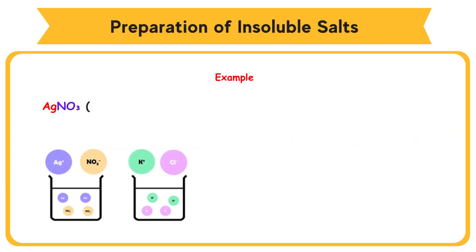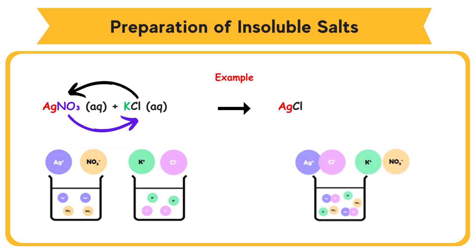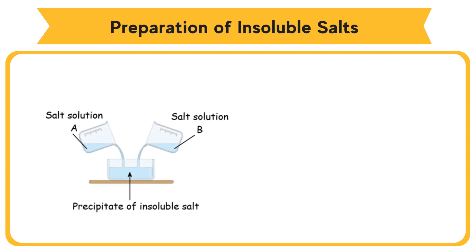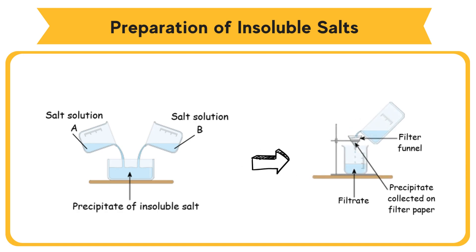Example: AgNO3(aq) + KCl(aq) → AgCl(s) + KNO3(aq). Steps: Choose two suitable soluble salt solutions which contain the cation and anion of the salt to be prepared respectively. Mix the two solutions. Filter, wash, and dry the precipitate formed. The precipitate is removed by filtration. The precipitate is then washed with distilled water and dried by pressing it between sheets of filter paper.